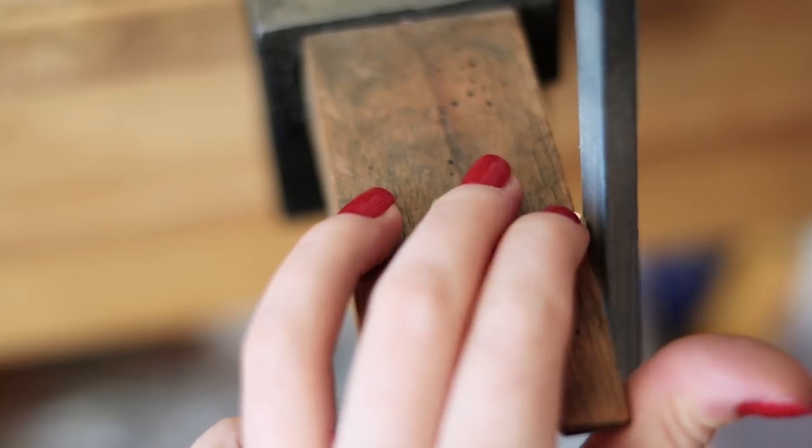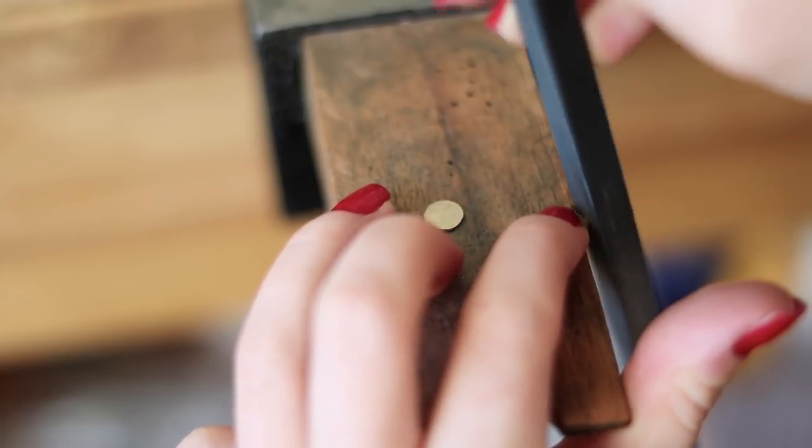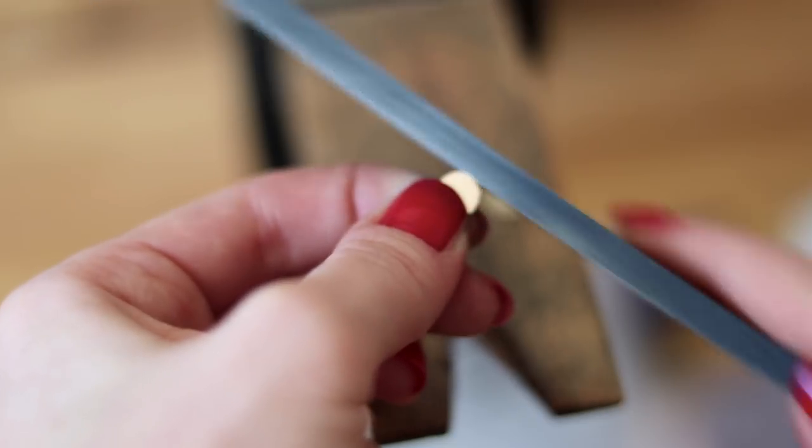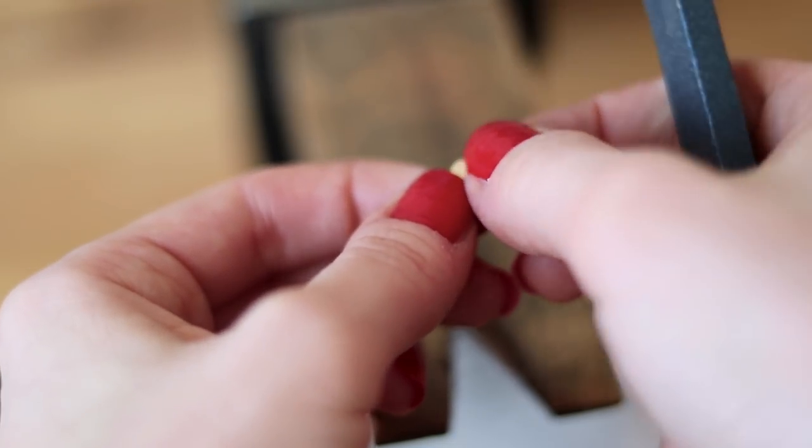Once the circles are cut out I will file and smooth out the edges using files and emery sticks. You can use this step to fix the shape if circles aren't perfectly round.